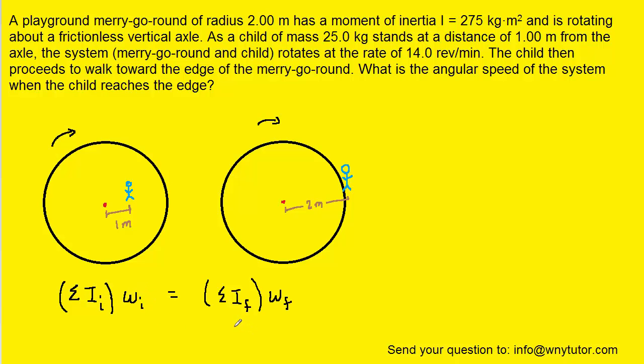And that's going to be set equal to the total final rotational inertia multiplied by the final angular velocity. Now we say total because we have to take into account the rotational inertia of both the merry-go-round and the child.